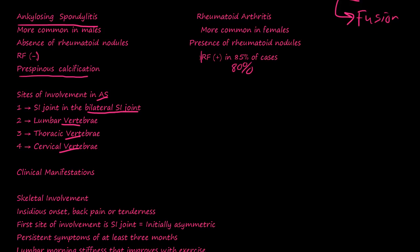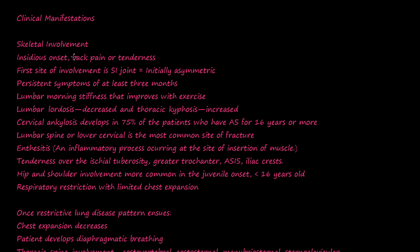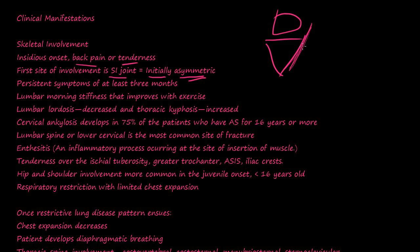The clinical manifestations: skeletal involvement has an insidious onset — it doesn't really happen after trauma. You just wake up and over time it gets worse and worse. You have back pain and tenderness. The first site of involvement is the SI joint. Initially it's asymmetrical — usually just one side starts getting inflammation or pain, but ultimately it will go to both sides. When it's one-sided, it could be an infection, a tumor, or a bone tumor destroying that joint.